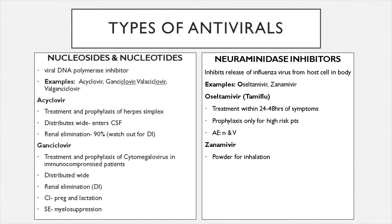This treatment must be given within 24 to 48 hours or it will not be effective. It's used as prophylaxis for high-risk patients — immunocompromised patients, HIV patients, cancer patients, or those with autoimmune illnesses — to prevent serious symptoms should they get the virus. Adverse effects include nausea and vomiting. Zanamivir does the same thing but is a powder that you inhale.